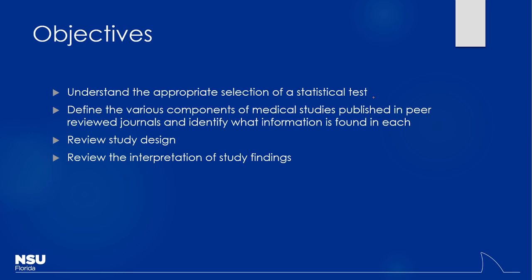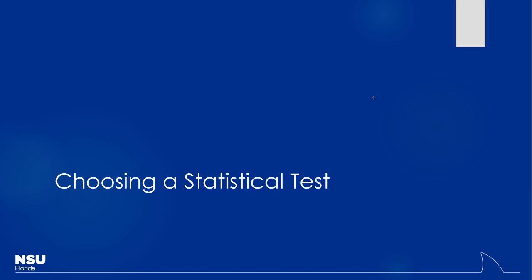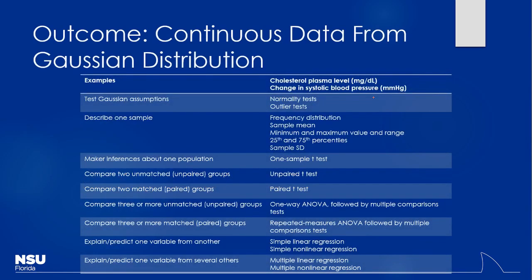How do we choose a statistical test? One of the first things we look at is whether the data is parametric or non-parametric. Do you remember the two types? There's parametric and non-parametric. When do I use each one? If we have a normally distributed set of data — a Gaussian distribution — we use parametric tests. So the first thing you have to know is: is your data set normally distributed or not? That determines whether you use parametric or non-parametric tests. Here we're looking at continuous data.